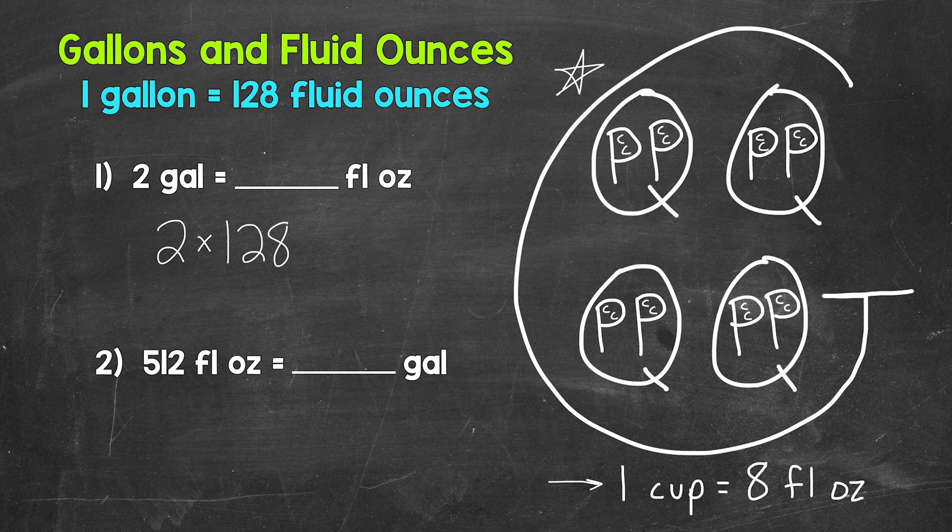Now, two times 128 gives us 256, so two gallons equals 256 fluid ounces. So again, when going from gallons to fluid ounces, multiply by 128.